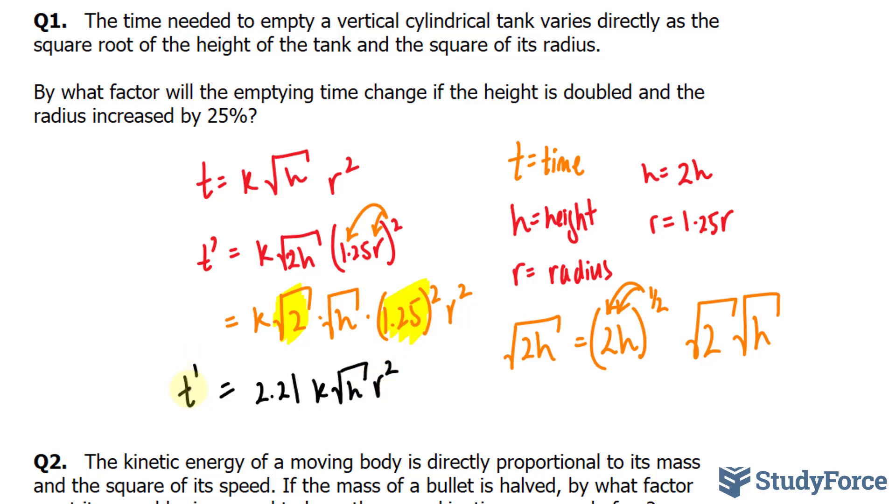Therefore, we can say that t prime is equal to 2.21 of, and notice that this looks identical to our original t. So instead of this, I can write down t.